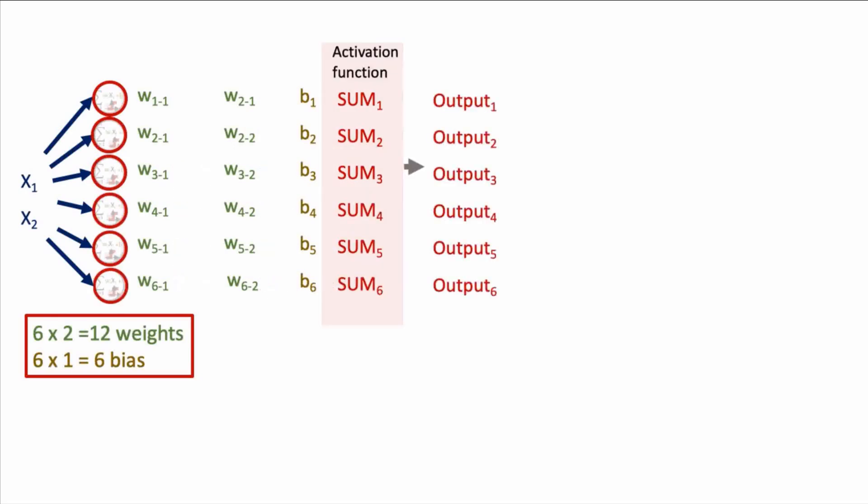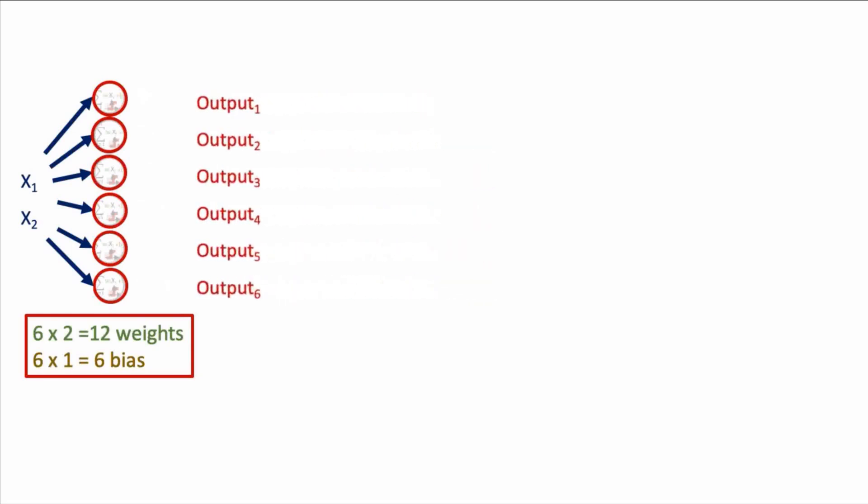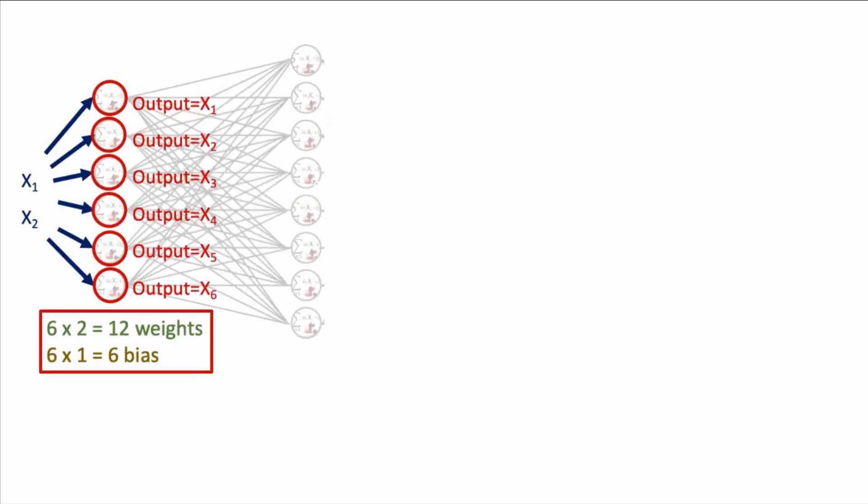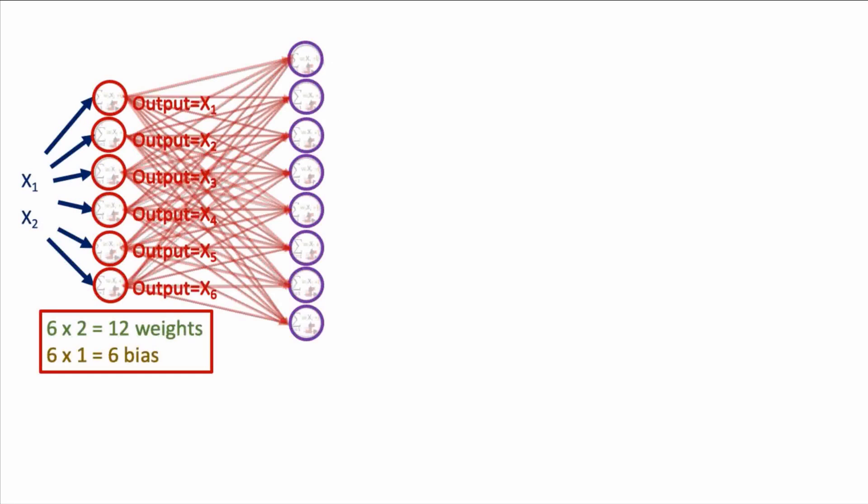In our fully connected neural network, the output of all the neurons in the first hidden layer gets sent to every neuron in the second hidden layer. Our second hidden layer has eight neurons. Each of these eight neurons receives six inputs, which are the outputs of each of the six neurons in the first layer.